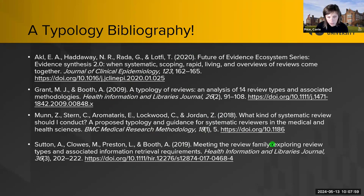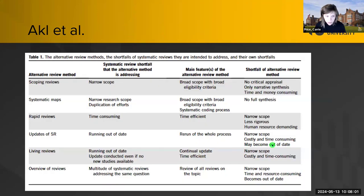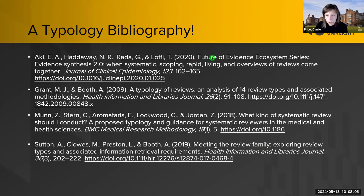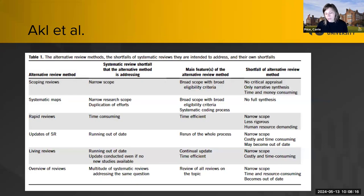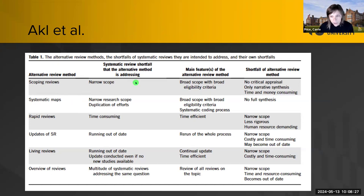This is the Ackle et al. article — 'The Future of Evidence Ecosystem Series: Evidence Synthesis 2.0 — When Systematic, Scoping, Rapid, Living, and Overviews of Reviews Come Together.' What I really like about these publications is they've created a table to synthesize the types of reviews, talking about scoping reviews, their main features, and shortfalls of each review type.